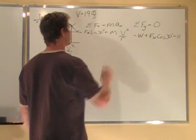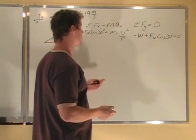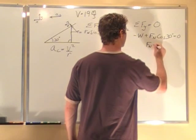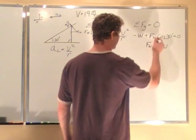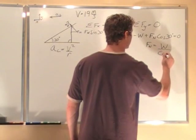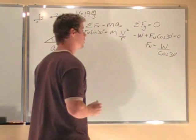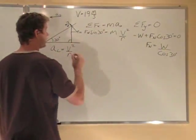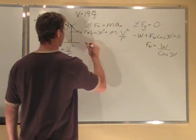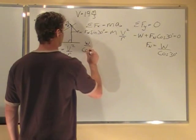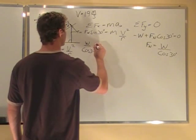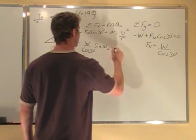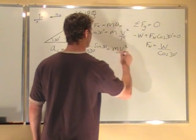We can solve for Fn. We have two equations here. We can say normal force equals, I add the weight over, then I can divide by cos 30, and that's what Fn is. So now I'm just going to substitute in here. So instead of Fn, I have W over cos 30 times sin 30 equals m v squared over r.